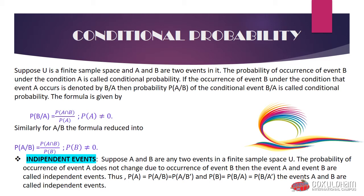The formula for conditional probability P(B|A) — the probability of B given A is fixed — is: P(B|A) = P(A∩B) / P(A), where P(A) ≠ 0. Similarly, if event B is fixed, the probability of event A occurring is P(A|B) = P(A∩B) / P(B), where P(B) ≠ 0.